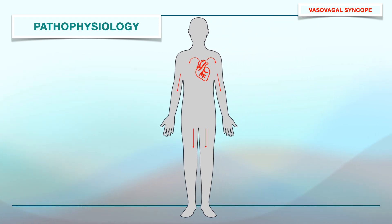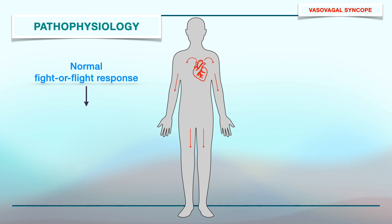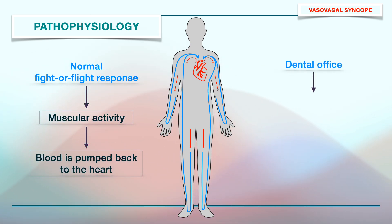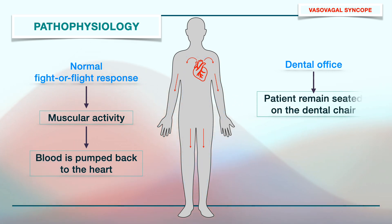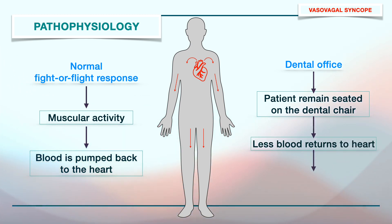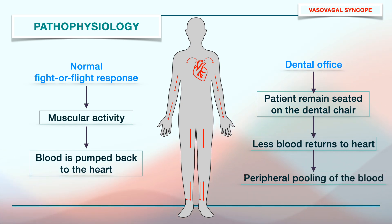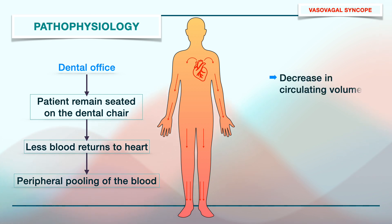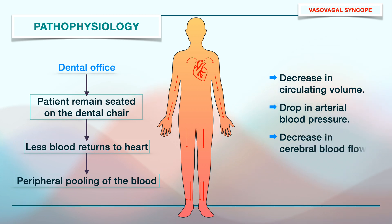Now in a normal fight or flight response, there is muscle activity and the blood is pumped back to the heart from peripheral tissues. However, patients in a dental setting cannot run or move and remain seated in the dental chair as the dental procedures are performed. This causes pooling of blood in the extremities with lesser blood returning to the heart. As a result, there is a relative decrease in circulating blood volume, drop in arterial blood pressure, and a decrease in cerebral blood flow.